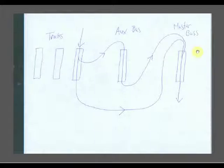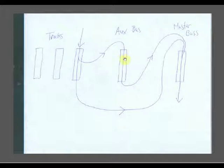Now let's look at an auxiliary bus. This is the same setup as before — your tracks, auxiliary bus, master bus. With the submix bus, there was only one path to the master bus. With the auxiliary bus, there are two paths. The signal comes down through the channel strip, and then a portion of it gets sent through what they call an auxiliary bus send to the auxiliary bus, processed, and then it comes back, gets summed, and goes down through the master bus. The other path is a direct signal to the master bus, the same routing you'd have with no buses at all.